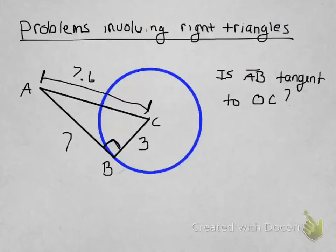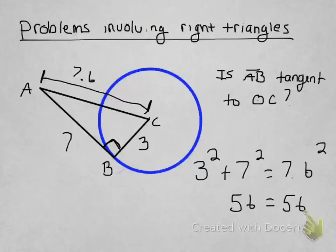So see, this is tying back in from unit 2. 3 squared plus 7 squared equals 7.6 squared. You calculate that out, and it does in fact end up correct as 56 equals 56.